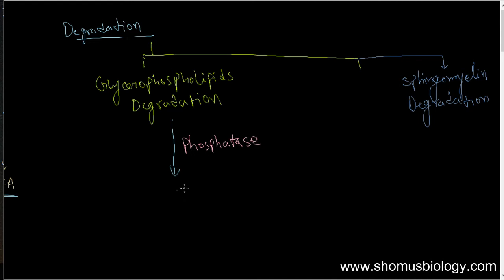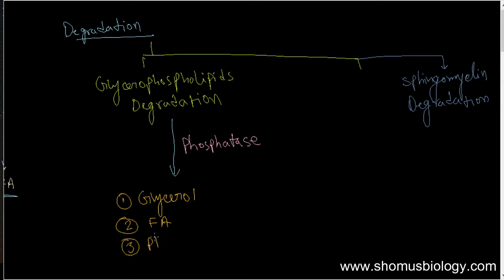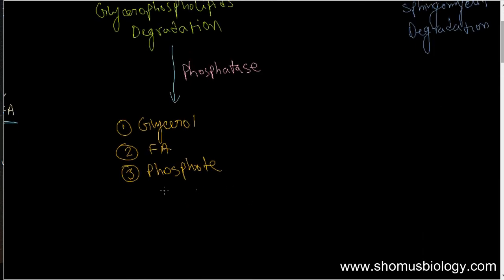The phosphatase enzyme breaks it down into its components: the components can be glycerol — all the structural constituents — as well as fatty acids, phosphate, and also the alcohols. So all these components are produced from glycerophospholipid degradation.